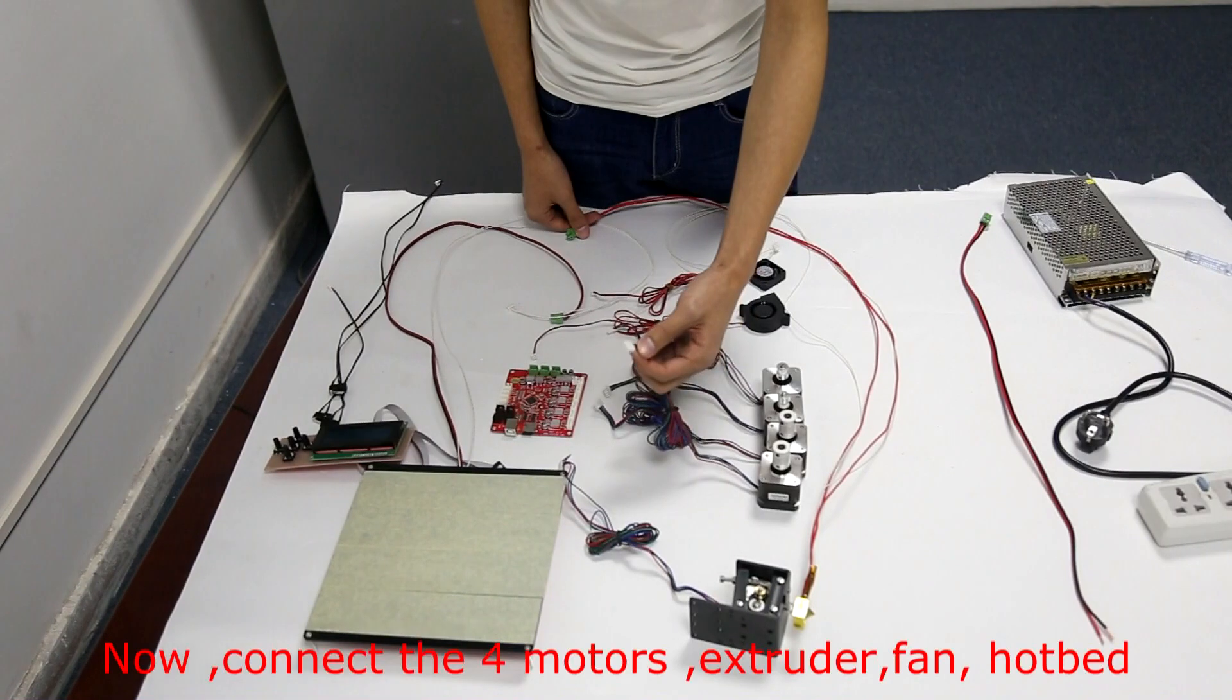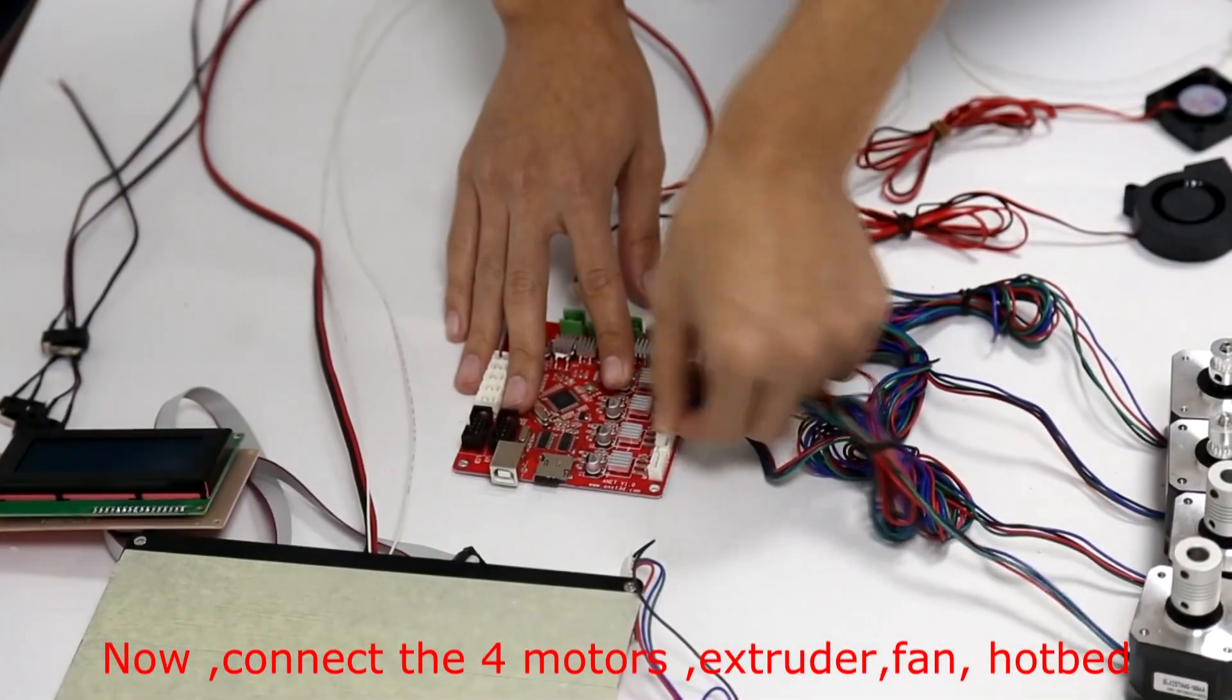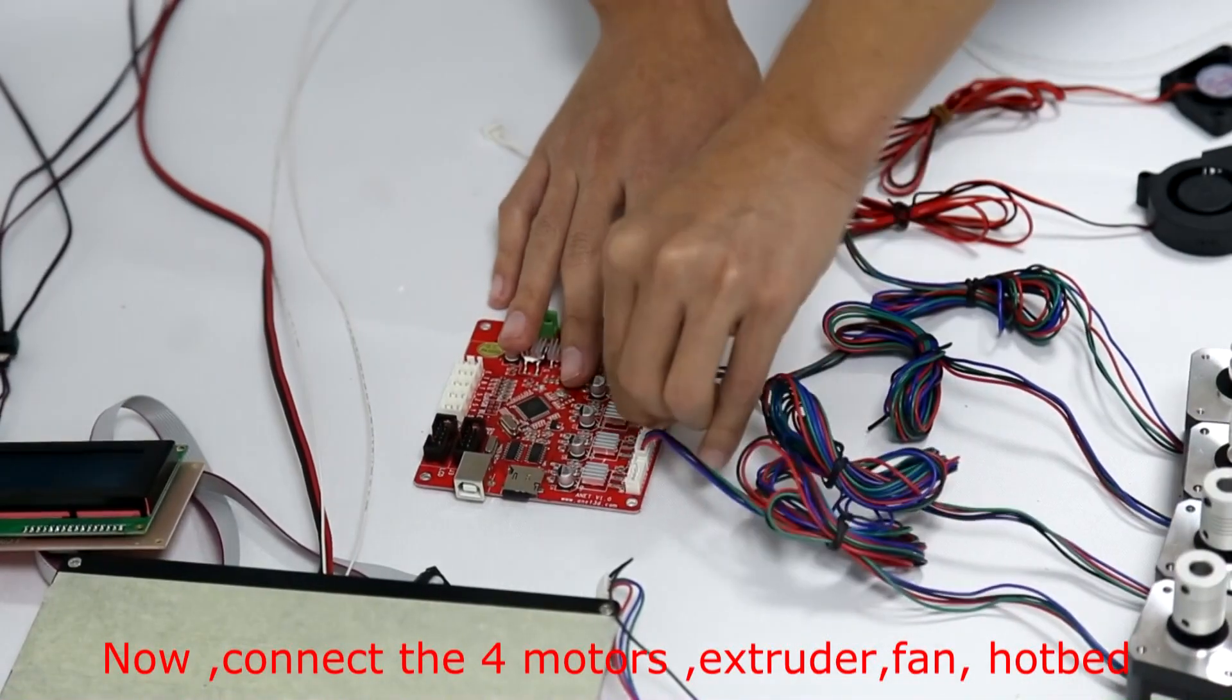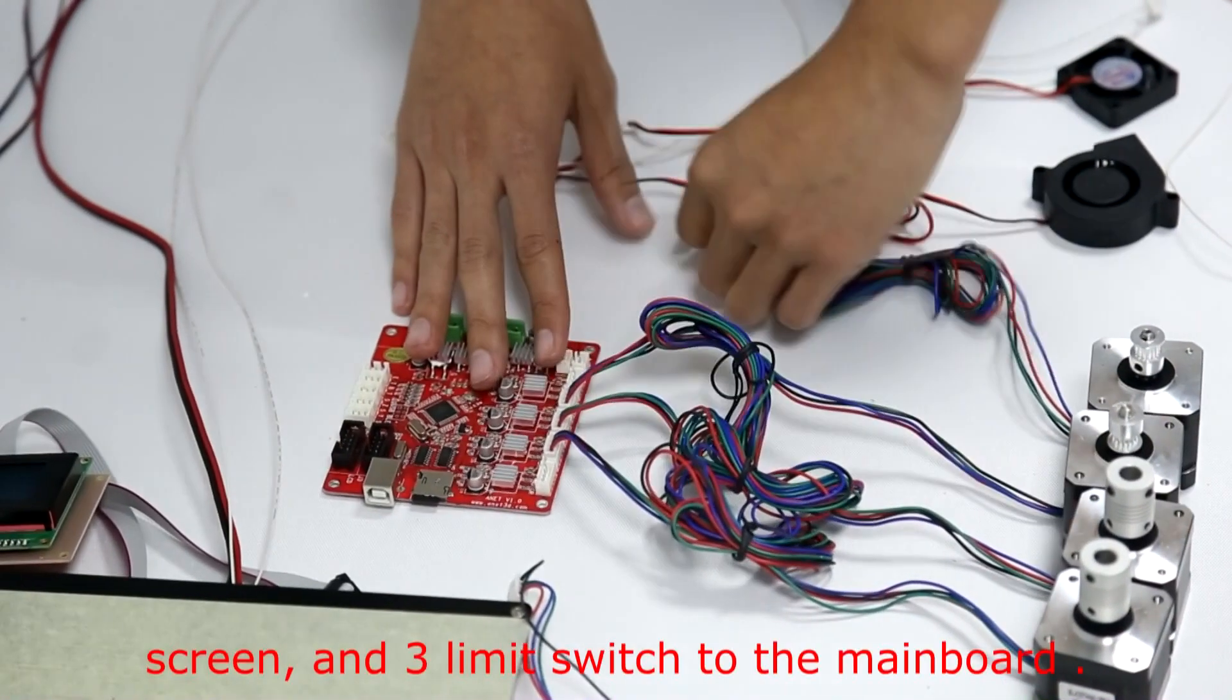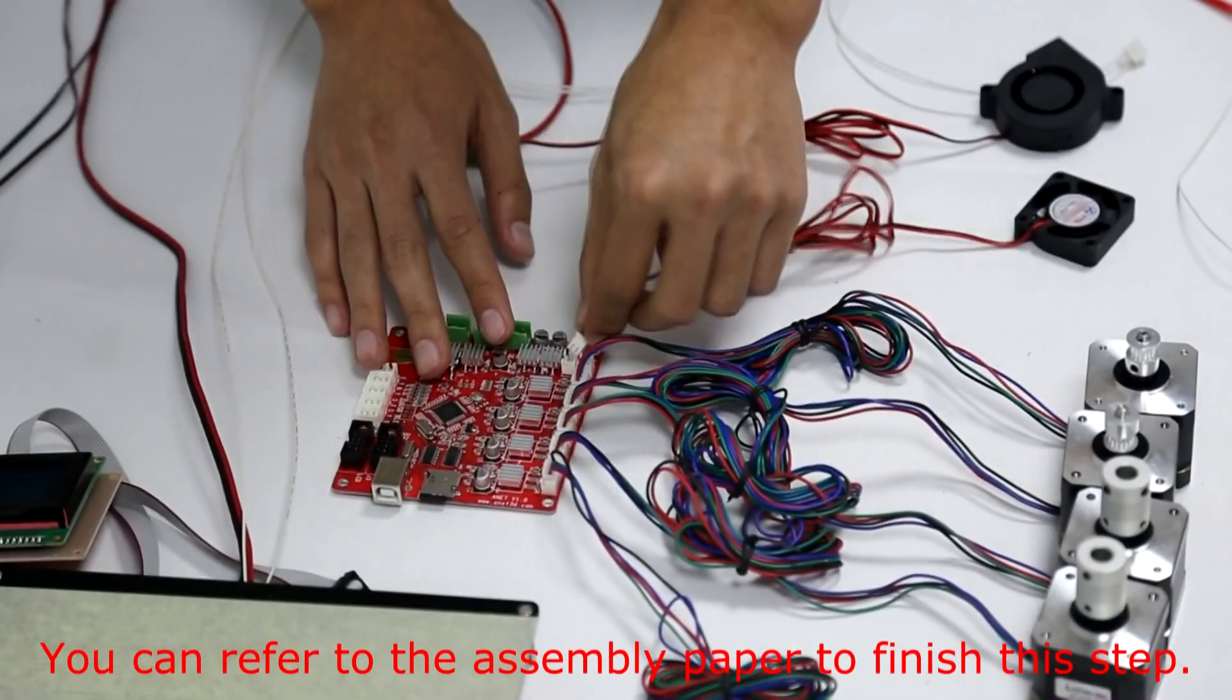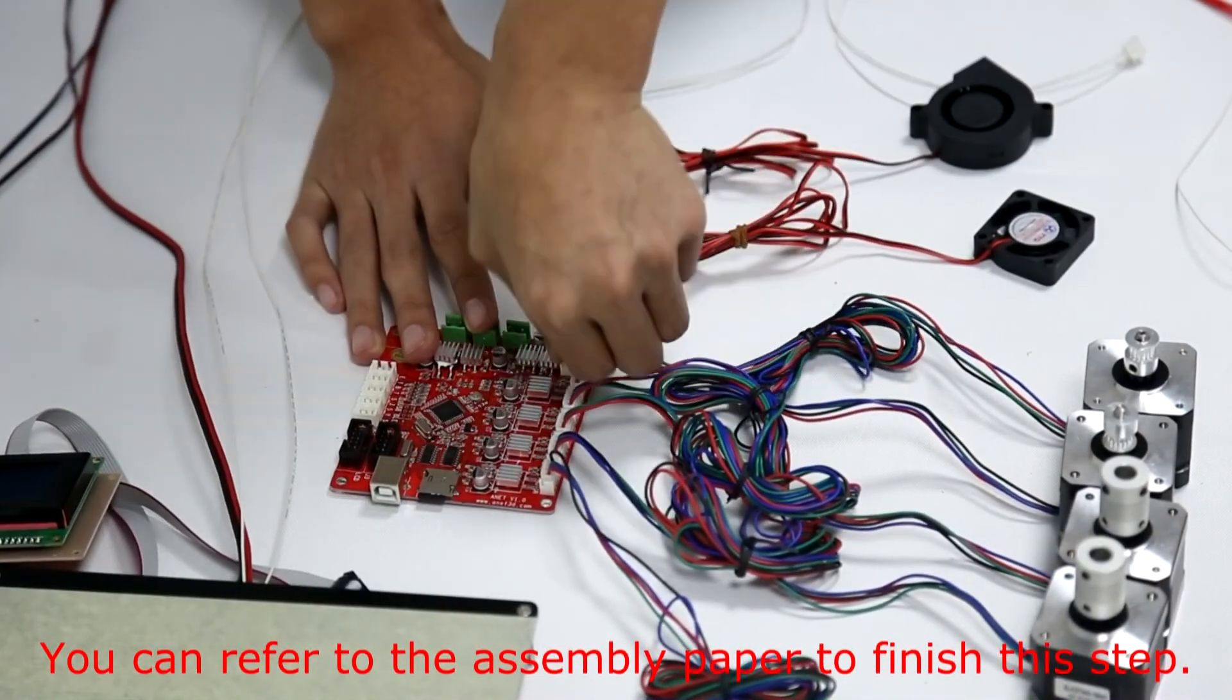Now, connect four motors, extruder, fan, hotbed, screen, and three limit switches to the mainboard. You can refer to the assembly paper to finish this step.